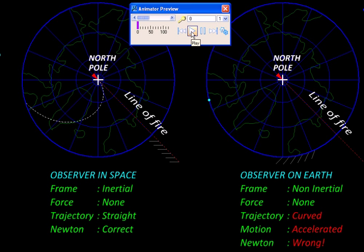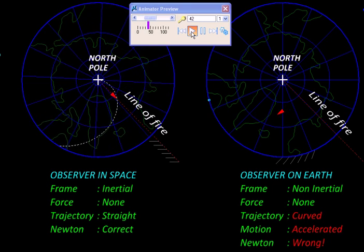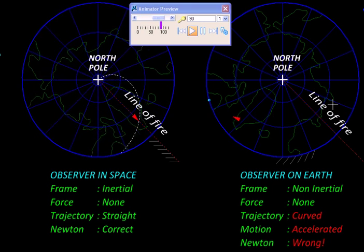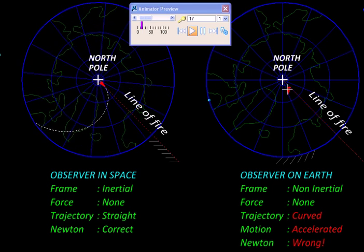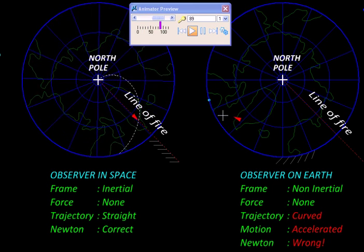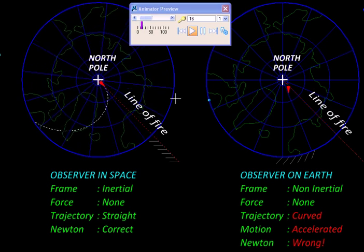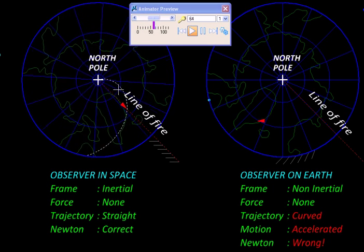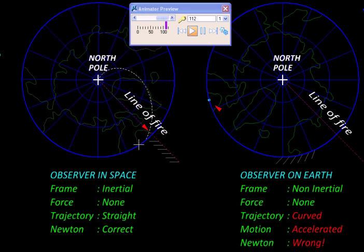Surprise, surprise - this time the cannonball is not going straight anymore but it is following a curved trajectory. This is nothing but the relative path that we plotted earlier on the Earth surface, this white dotted curve, and the shell is following it.